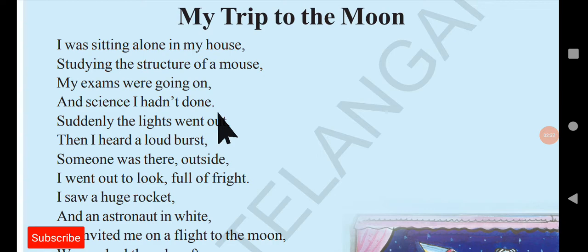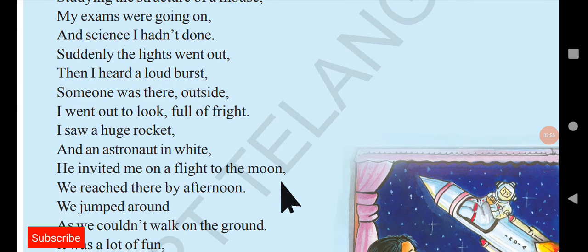While he was studying alone at home, suddenly the lights went out — there was a power cut. 'Then I heard a loud burst, someone was there outside, I went out to look, full of fright.' There was a huge burst, like the burst of a rocket. This boy sensed that someone was outside, and since he was all alone at midnight, he was very frightened because of that sound.